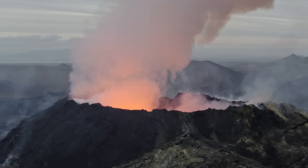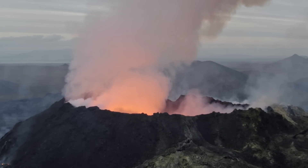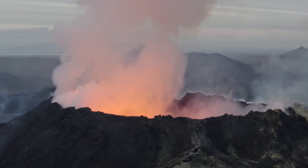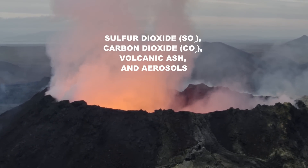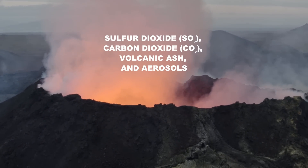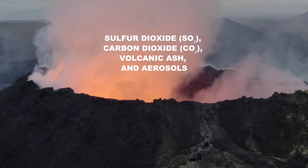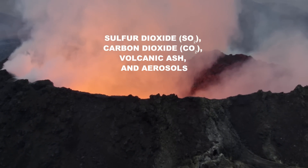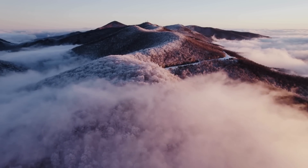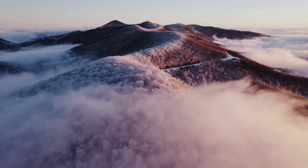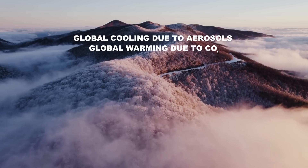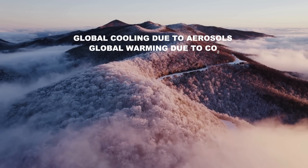Volcanic eruptions are natural phenomena that can significantly impact the global climate. When a volcano erupts, it releases a mixture of gases and particles including sulfur dioxide (SO2), carbon dioxide (CO2), volcanic ash, and aerosols, which can significantly alter Earth's climate. Volcanic eruptions can influence global climate primarily through two mechanisms: global cooling due to aerosols and global warming due to CO2.